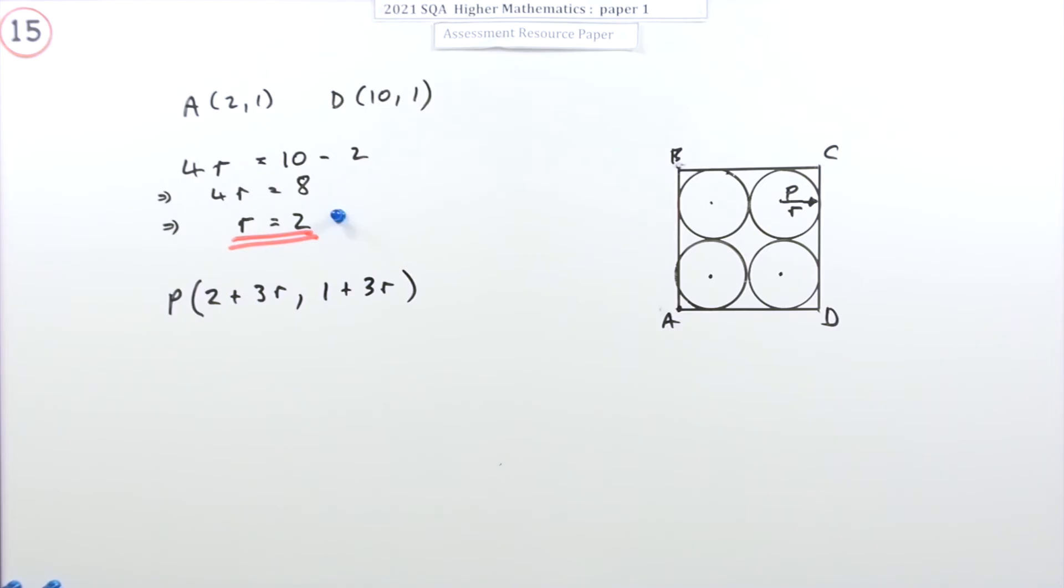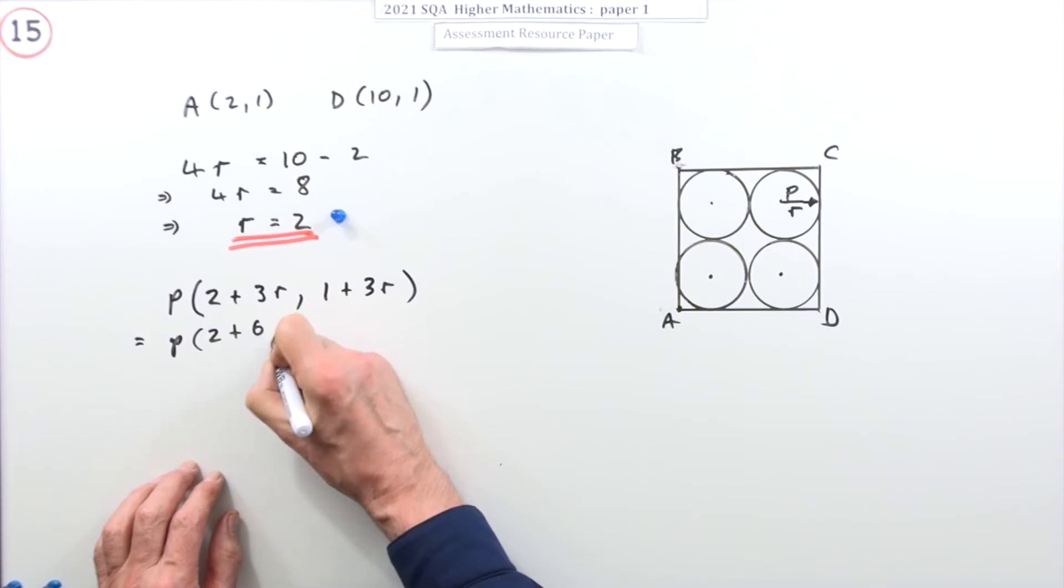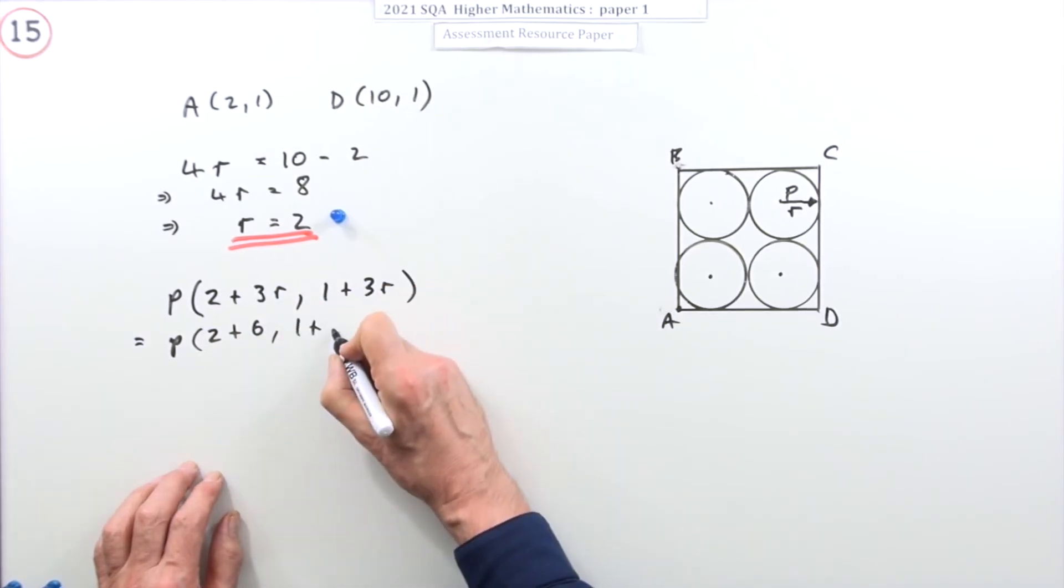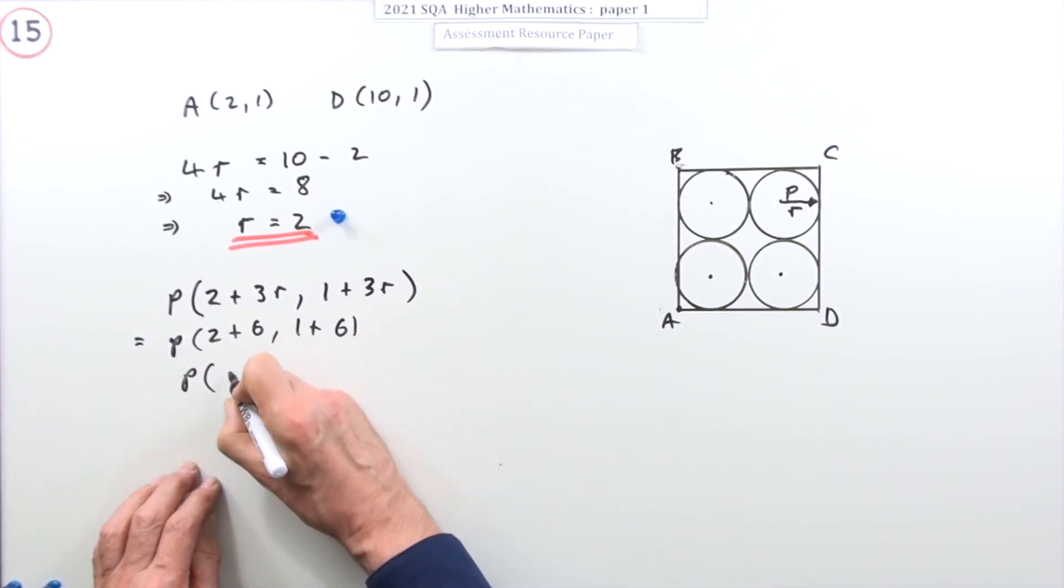So that means P is going to be 2 plus 6, you could just put the answer in, 1 plus 6. So P is going to be the point (8,7).